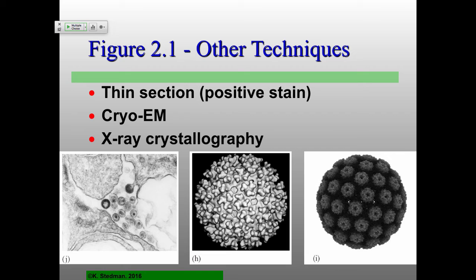Now for cryo-EM — cryo meaning in ice. The virus structure reconstructions we'll be looking at for the rest of this course are not structures of a single virion; they're reconstructions of many, many pictures of virions averaged together in the computer. If you're really lucky and your virus is really small, you can crystallize it and do pretty standard X-ray crystallography, which gives you the highest resolution, but there are very few virions that people have been able to actually crystallize.